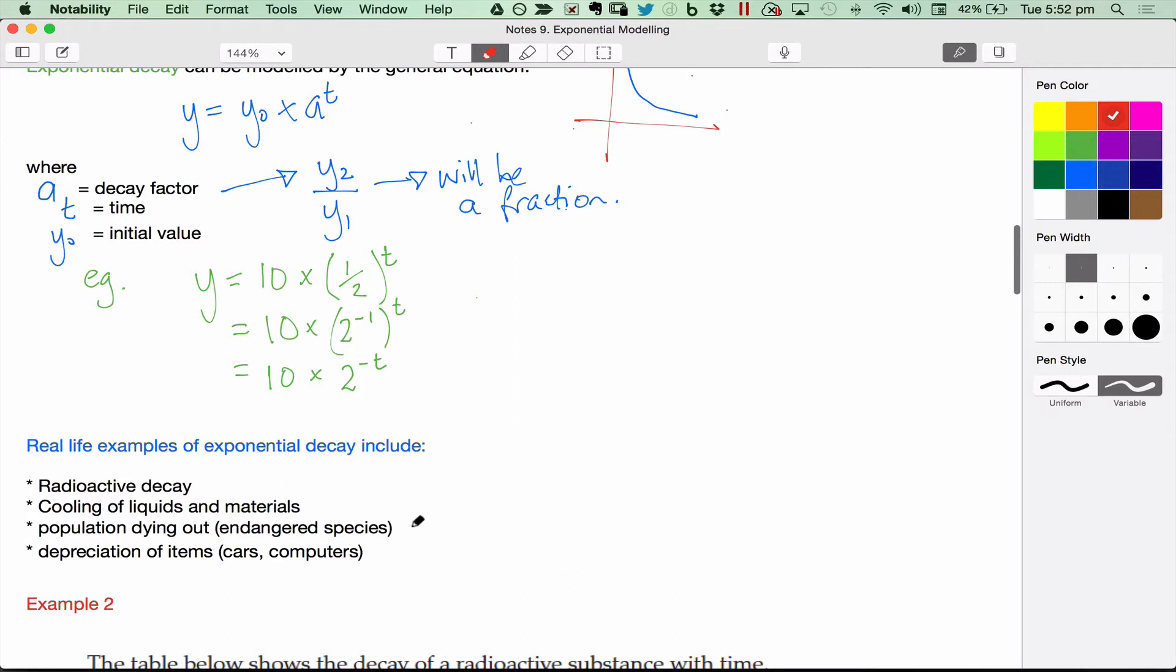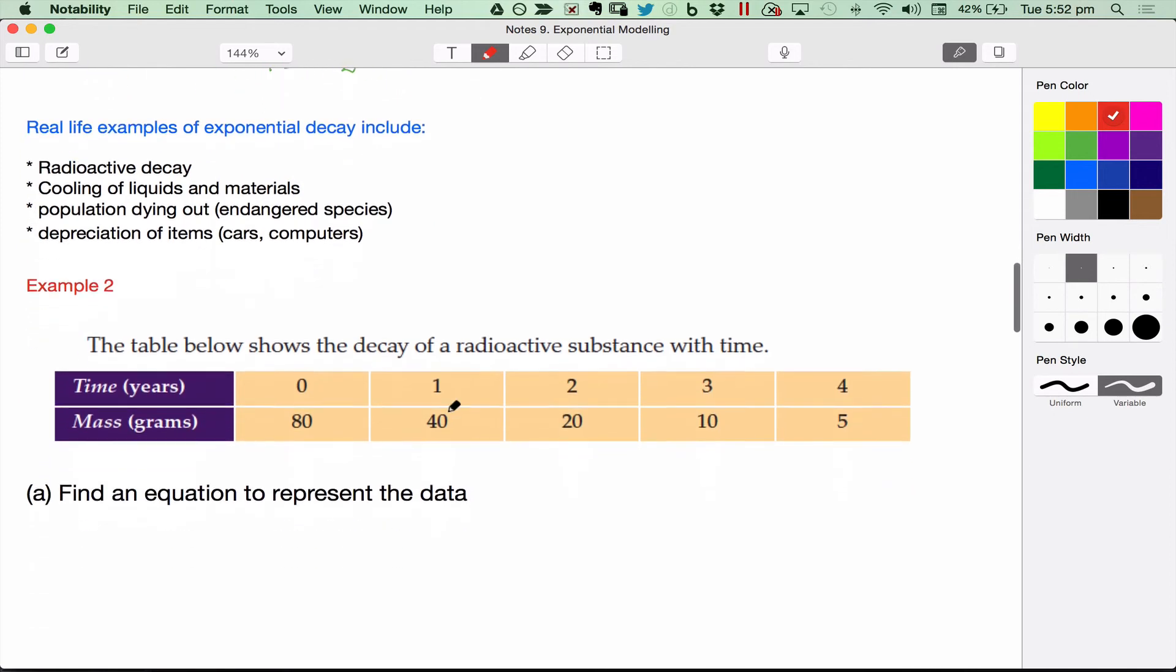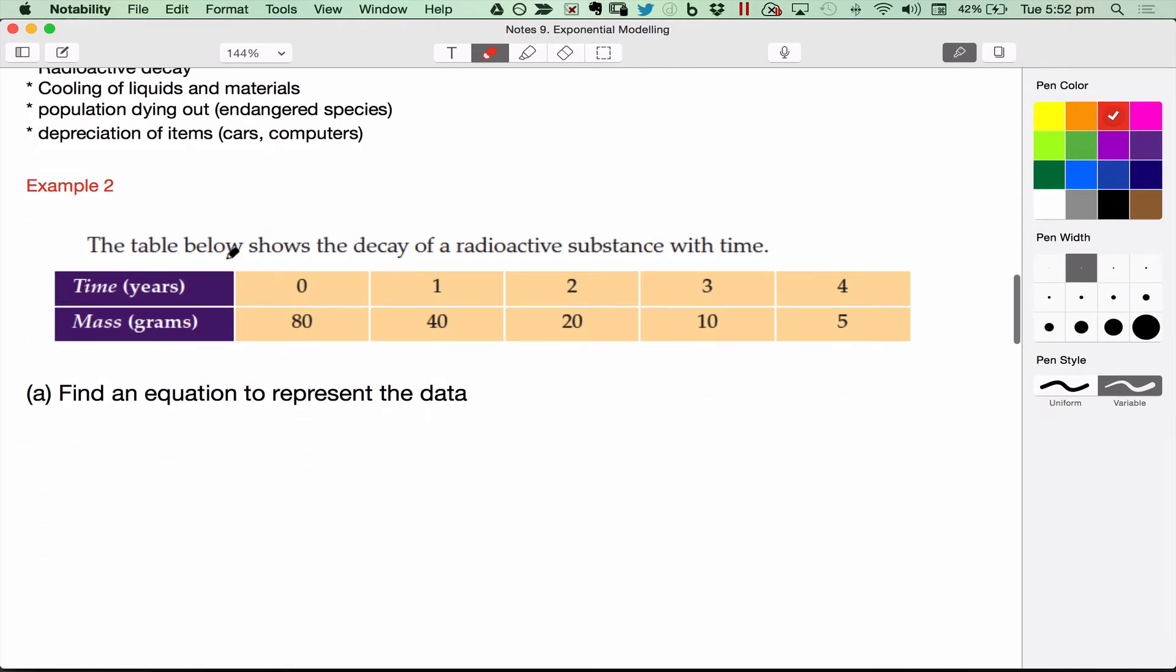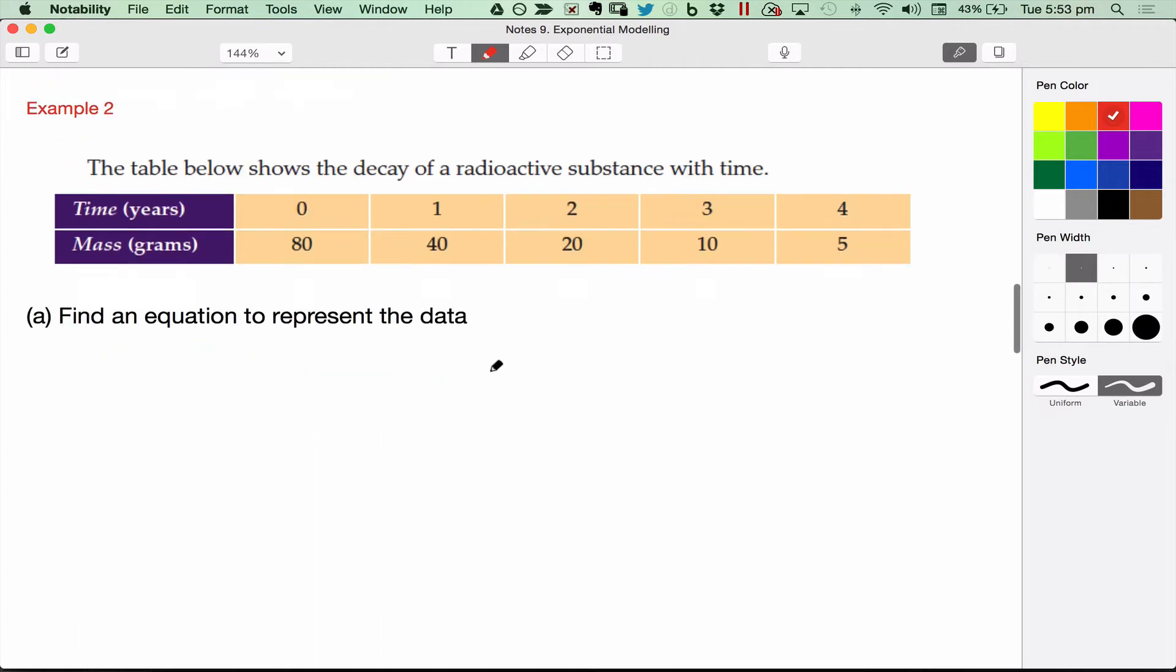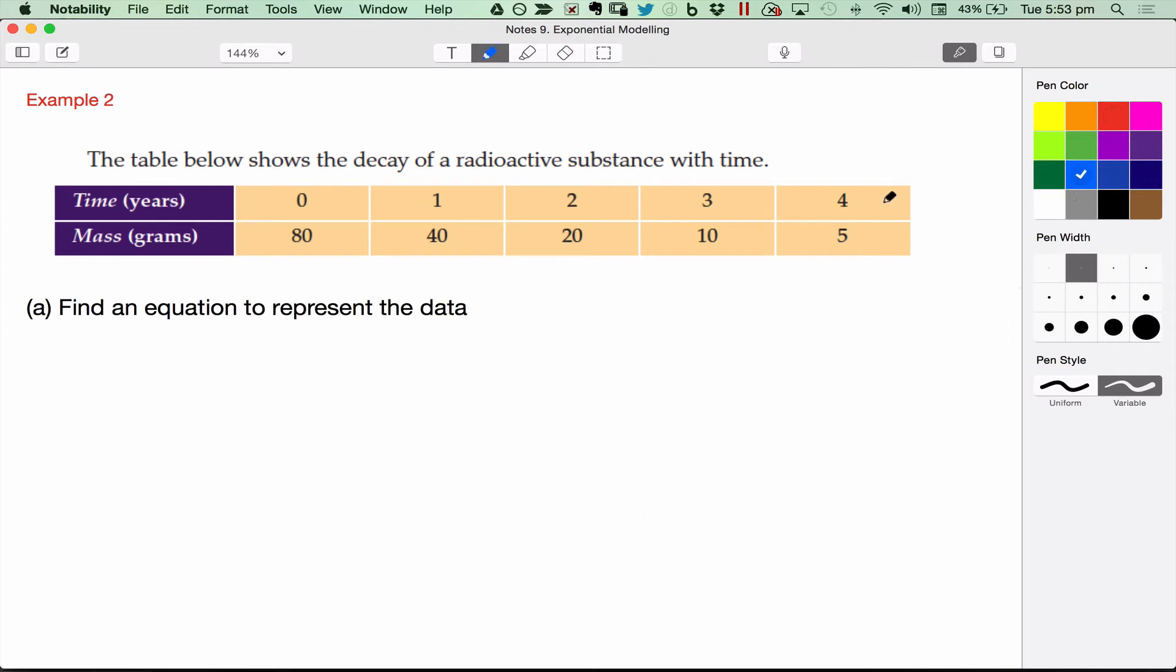Second example here, I've got a table of values showing the decay of a radioactive substance over time. So here you can see the different example. In the first example, time was in minutes, this time is in years, and the mass in grams is getting smaller and smaller over time, so it's decaying away. Finding an equation to represent the data, you might like to pause and have a go at this yourself, otherwise keep listening.